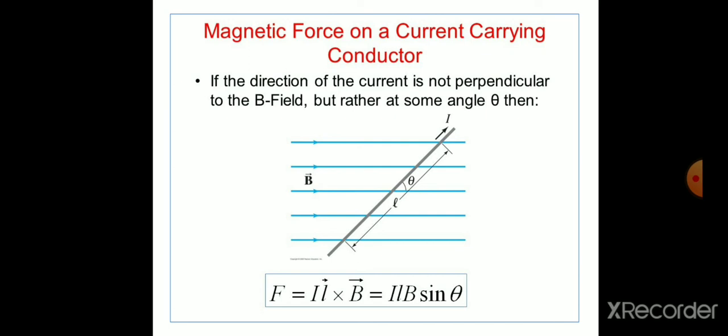Magnetic force can also be represented by F = I × L × B × sin θ, or I × L cross B.